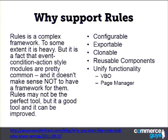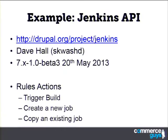You can get some quick solutions with rules. Just yesterday, a module was released — an API for Jenkins — which is basically a set of rules actions that anyone can now use to integrate with their own site or module. It provides actions for triggering a build, creating a new job, or copying an existing job. This is the whole point of rules: rather than having to code custom integrations, it's much less work for site builders.